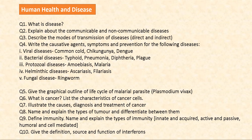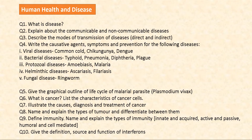First, Human Health and Disease. You need to read about the definition of disease, communicable and non-communicable diseases — what they mean and the differences between them. Then describe the modes of transmission of diseases, direct or indirect methods. Write the causative agents, symptoms, and prevention of viral diseases like common cold, chikungunya, and dengue; bacterial diseases like typhoid, pneumonia, diphtheria, and plague; protozoal diseases like amoebiasis and malaria; helminthic diseases like ascariasis and filariasis; and the fungal disease ringworm.